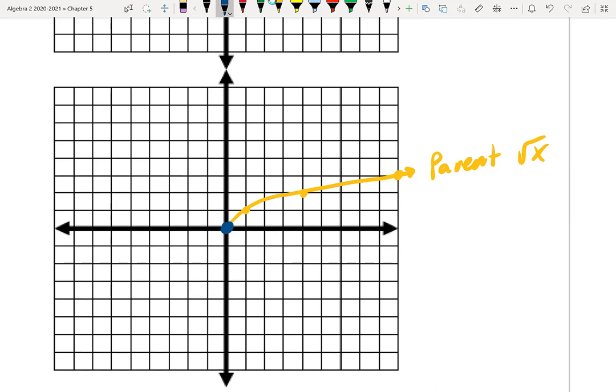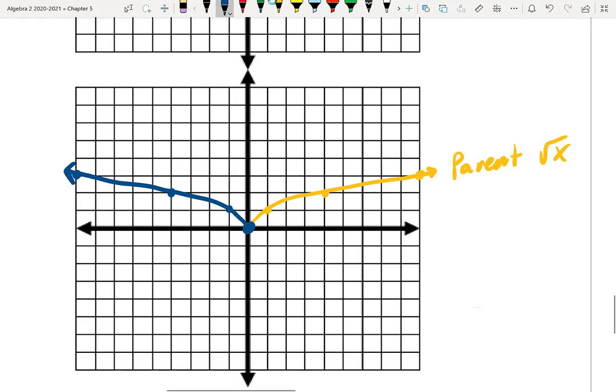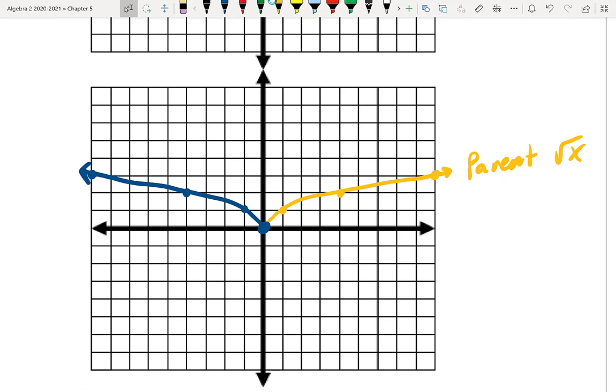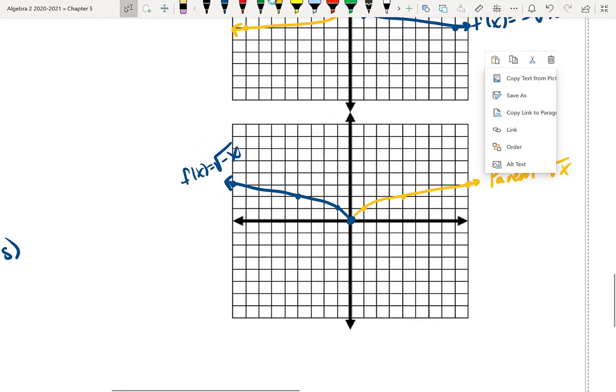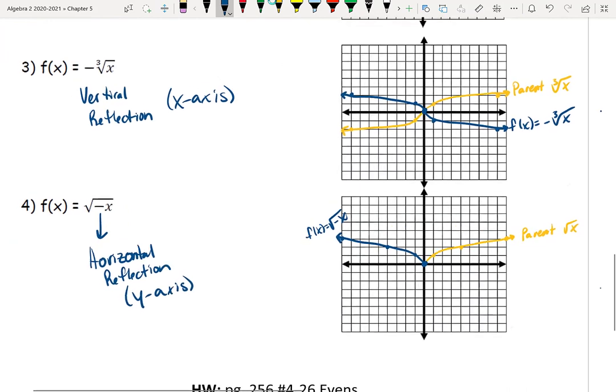If we're reflecting this horizontally, that just means that instead of going up and to the right, it's going to go up and to the left. So I still follow my same 1, 3, 5 shortcut. It's just that I'm going up 1 left 1, up 1 left 1, 2, 3, up 1 left 1, 2, 3, 4, 5, to get a graph that goes this way instead of the right direction. This is the correct way for f(x) equaling the square root of negative x.